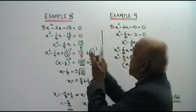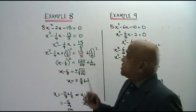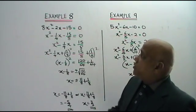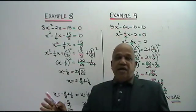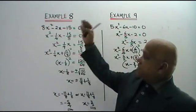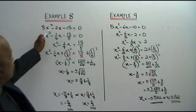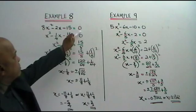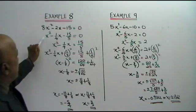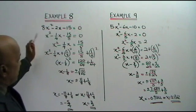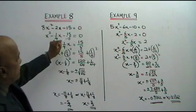I have for you another 2 examples of quadratic equations which you are supposed to solve by completing the square. Let's look at example 8. We apply the same techniques. 8x squared minus 2x minus 15 equals to 0. Divide all by 8. So this is what you get: 1, then 2 over 8 is 1 over 4, then 15 over 8 equals to 0.